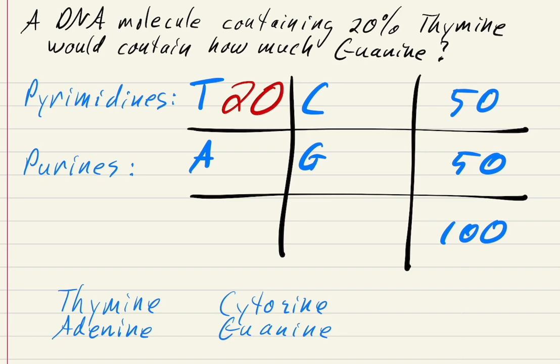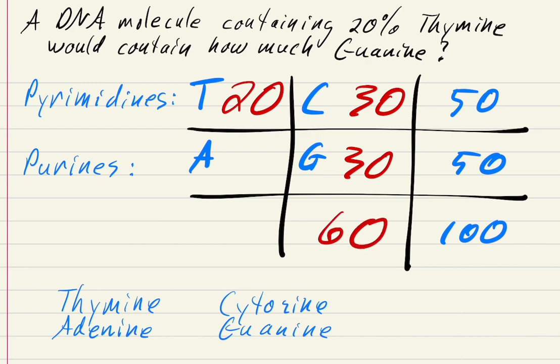Let's go clockwise. If the total is 50 in that row and T is 20, then C has to be 30, because 20 plus 30 equals 50. Well, if C is 30, G has to be 30 as well, because they pair one to one. So if C is 30, G is 30. And 30 plus 30 is 60, so that goes in the column total. If the bottom row has to equal 100 and the second column is 60, the first column has to be 40.